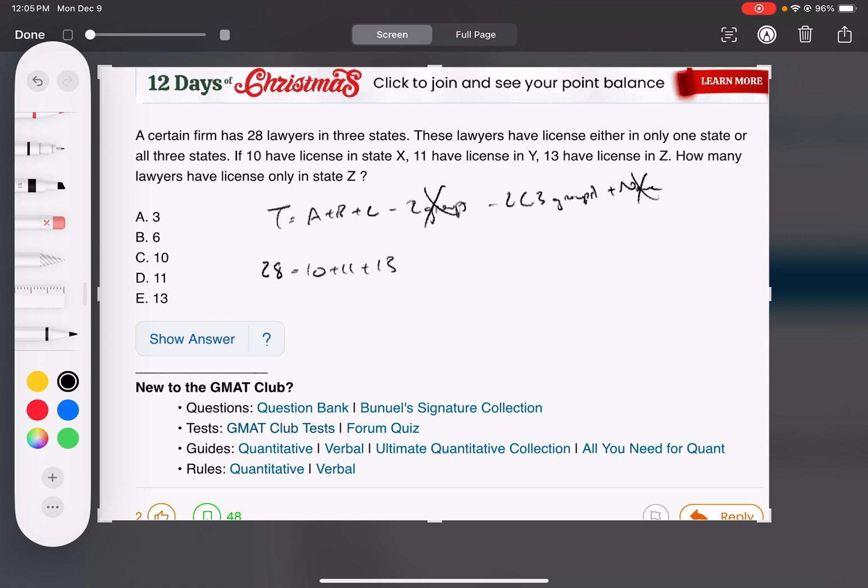11 plus 13. I know there's nobody in two groups so then minus two times the number in all three. X is just the number in all three, I don't know that, I'm gonna solve for that.